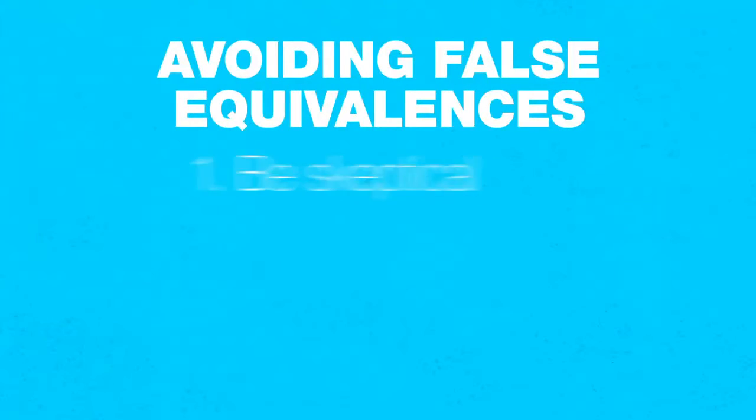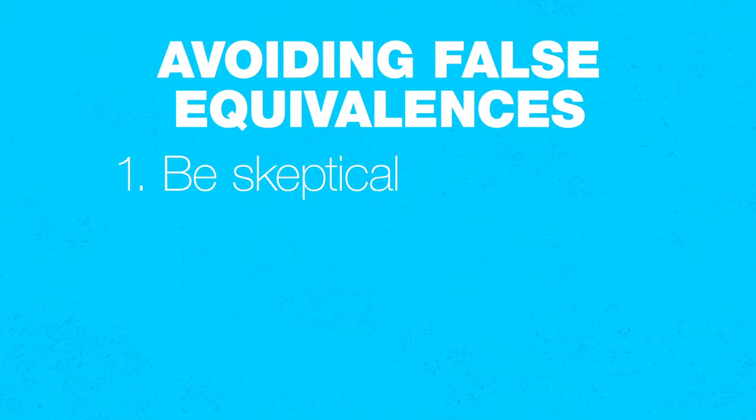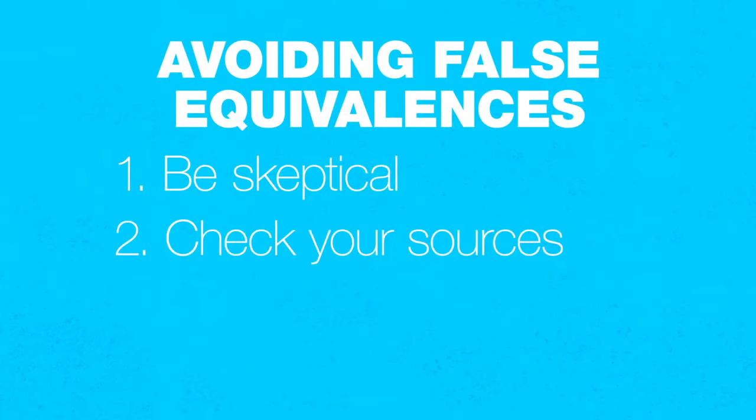My number one tip is to think like a journalist, and that means to be skeptical. Do your own fact-checking. Don't just accept something somebody's saying just because they're on TV or they're in a certain newspaper. Tip number two would be to check your sources. When somebody says something — when you're reading it or when you see them on TV — think about where they're coming from. What's their point of view? What's their agenda?